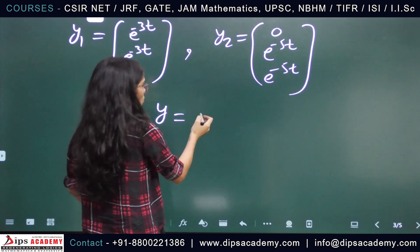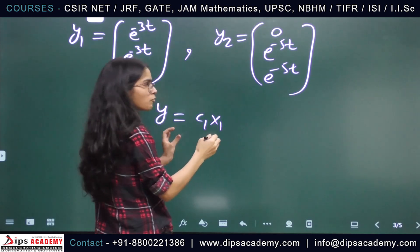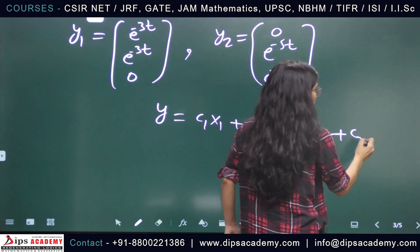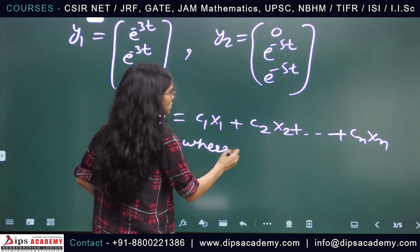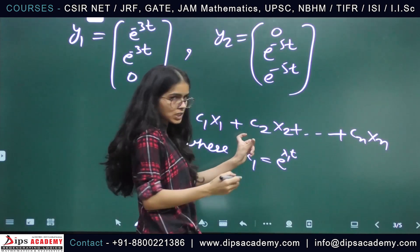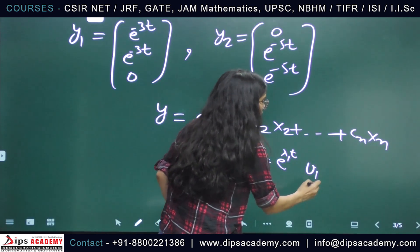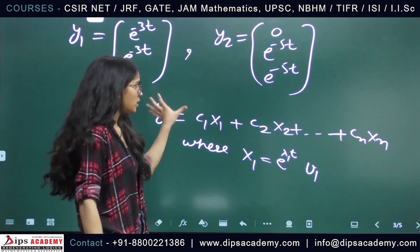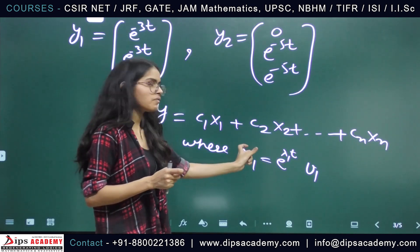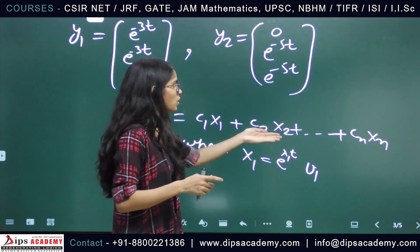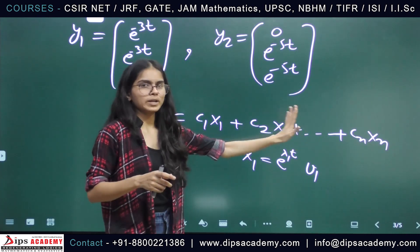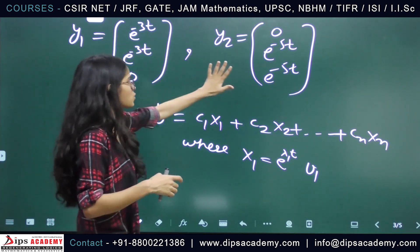As we study systems of differential equations, the general solution for an n×n system has the form: y = c1*x1 + c2*x2 + ... + cn*xn, where each xi = e^{λi·t} · vi. Here λi is an eigenvalue of matrix A and vi is the corresponding eigenvector.